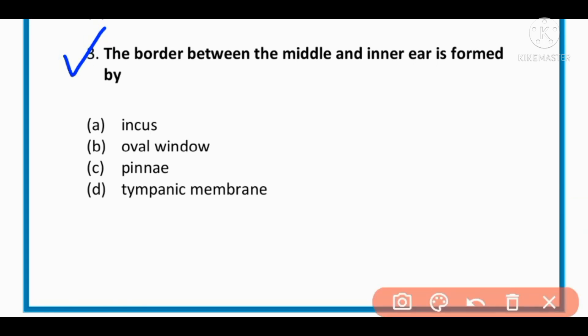MCQ number 3: The border between middle and inner ear is formed by incus, oval window, pinna, or tympanum. The correct option is B: oval window is the border between middle and inner ear.